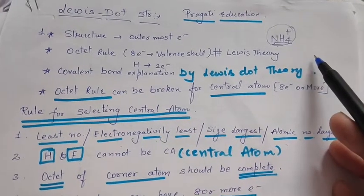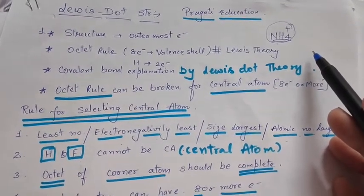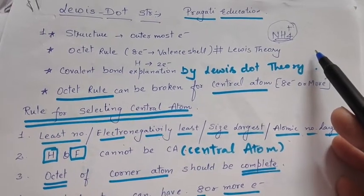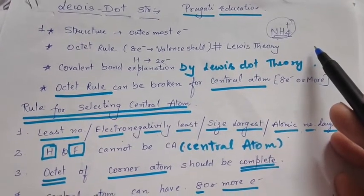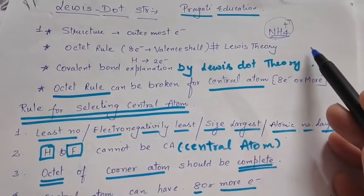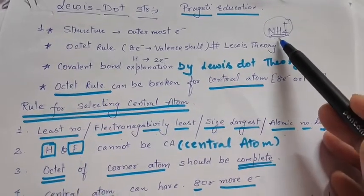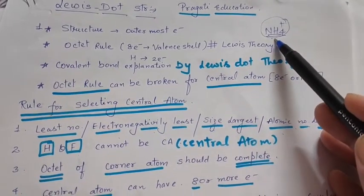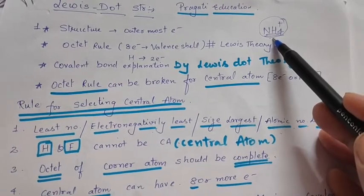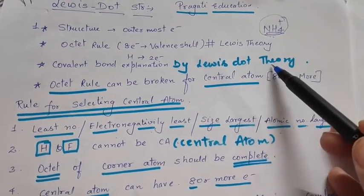Good morning, dear students. Today we are going to learn Lewis dot structure tricks, which is a very important topic related to your school exams. For example, if you are asked to write the Lewis dot structure of ammonia, how are you going to write it? This is given by Lewis theory.